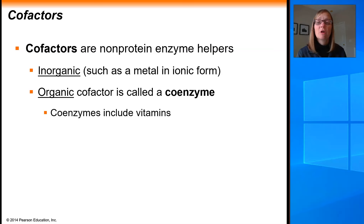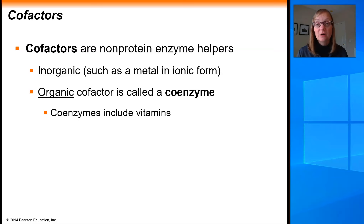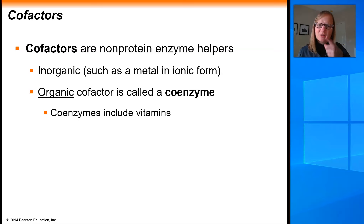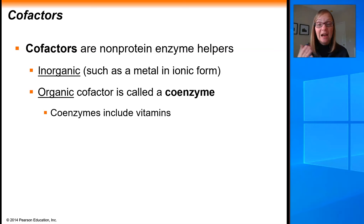There are two different kinds of cofactors. You have cofactors that are inorganic, meaning not carbon based — these are typically going to be metals in ionic form. You can also have organic cofactors that are carbon based, which are usually derived from vitamins that we consume as part of our diet. These organic cofactors are more specifically called coenzymes. The reason why it's important to get your vitamins and minerals is because they act as these inorganic and organic cofactors that help the enzymes in your body accomplish their job.